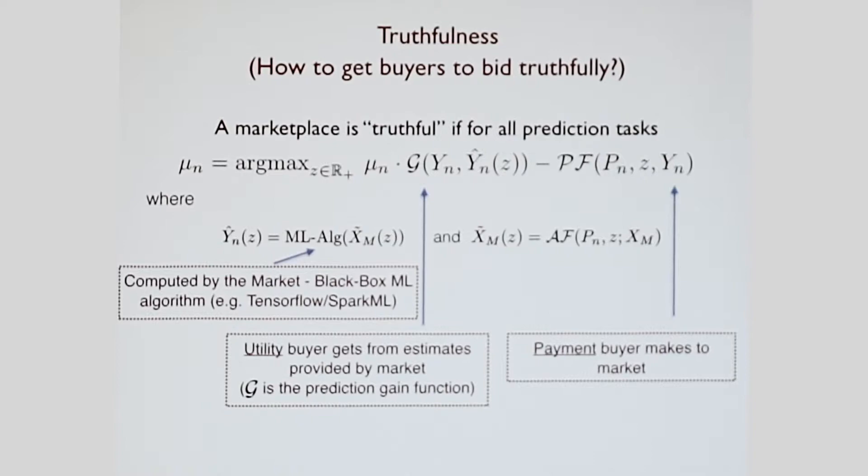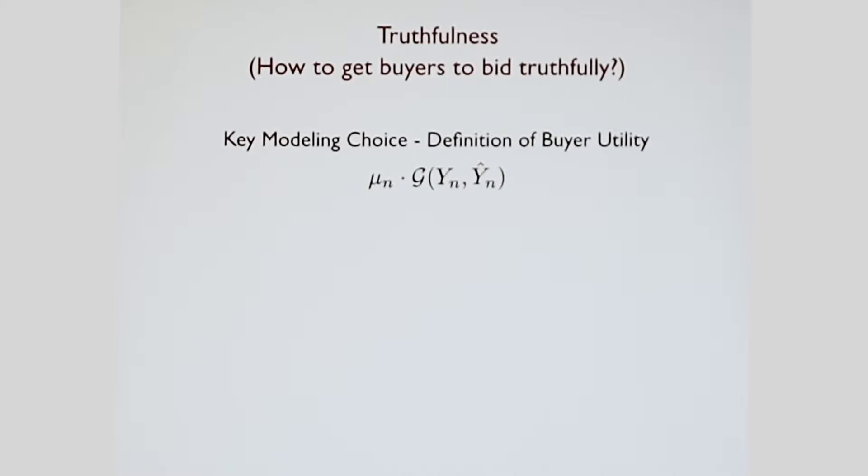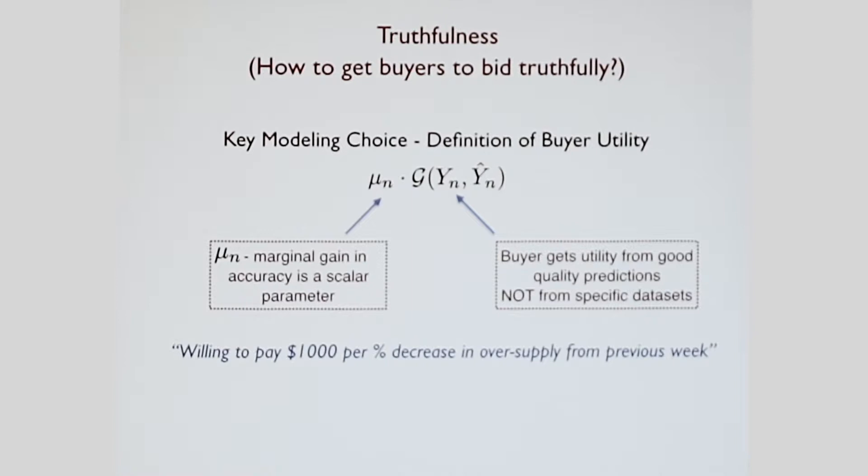So what is the market designed to make things truthful? It designs the payment function and the allocation function. Before I get into that, it's about the key modeling choice we make. It's how we define buyer utility. The first point is that a buyer gets utility from good quality predictions. They do not care what data sets give them those predictions. If I'm a logistics company, I do not care if it's Starbucks coffee cups that are giving good predictions or coffee beans. I just want to make good predictions. Second is that the mu n, the marginal gain in accuracy, for the moment is a scalar parameter. Something along the lines of a thousand dollars per percent decrease in oversupply. Those are the key modeling assumptions we make.